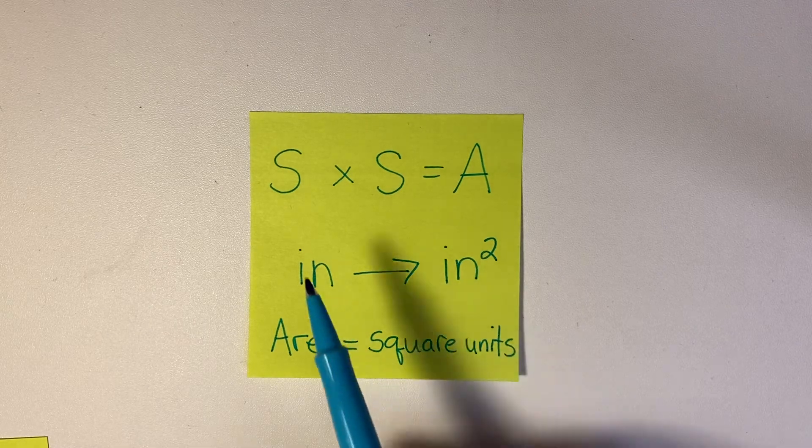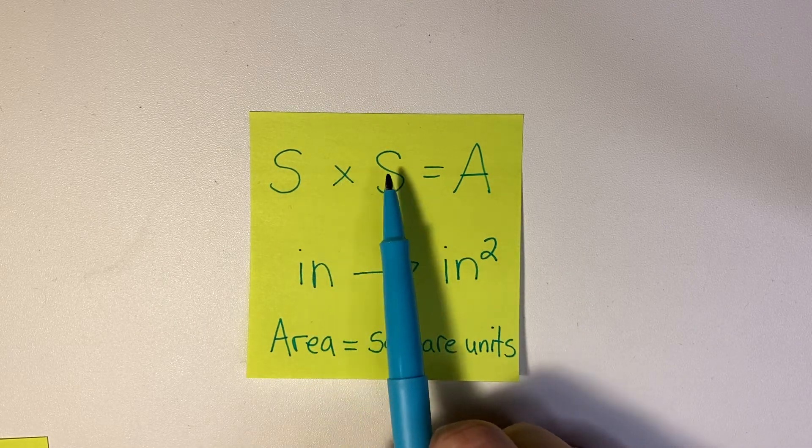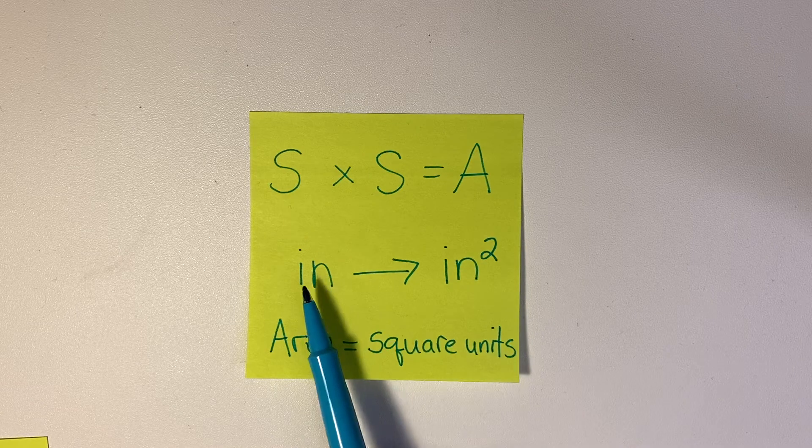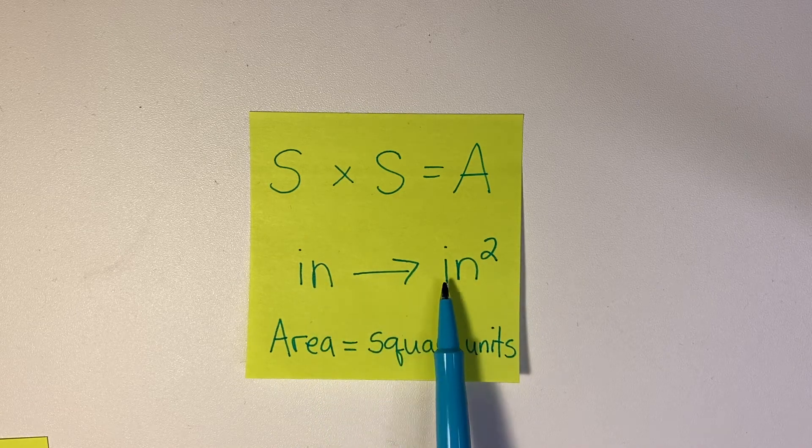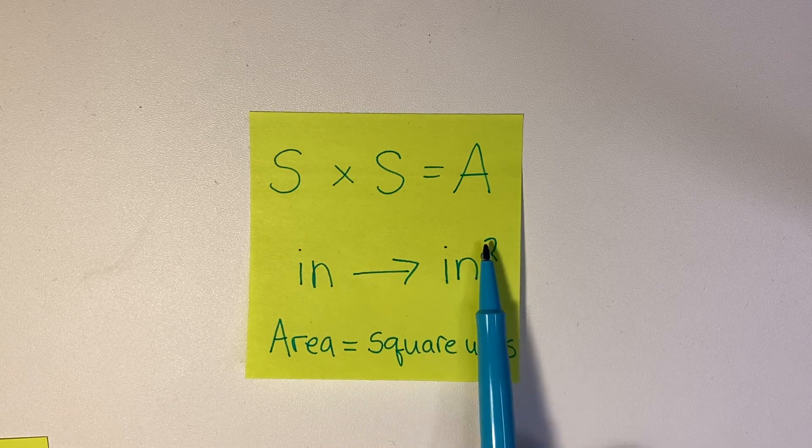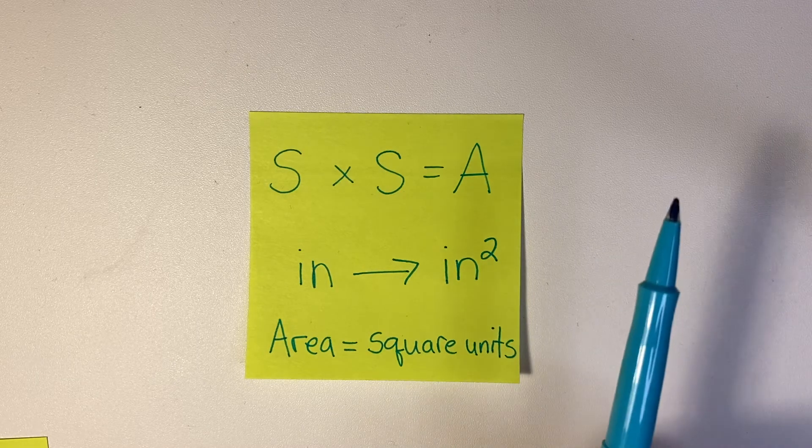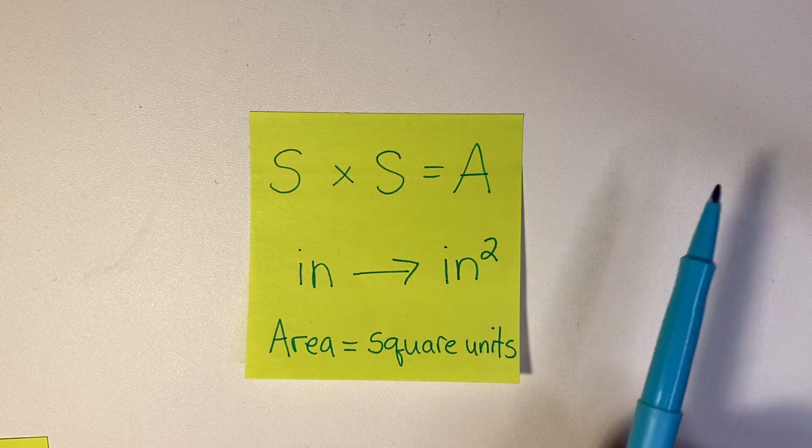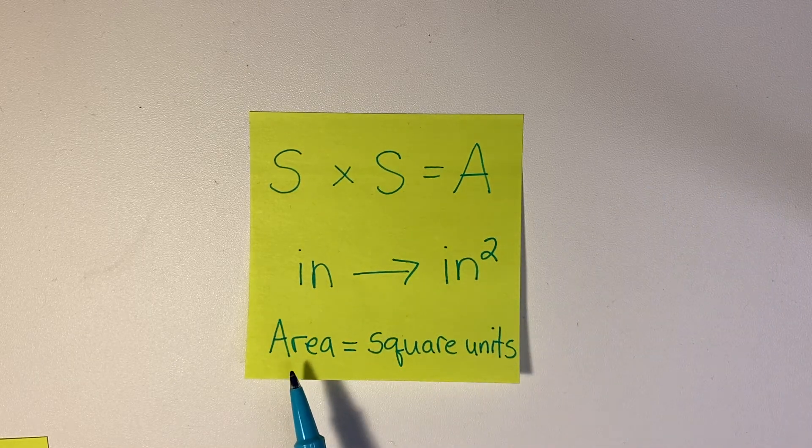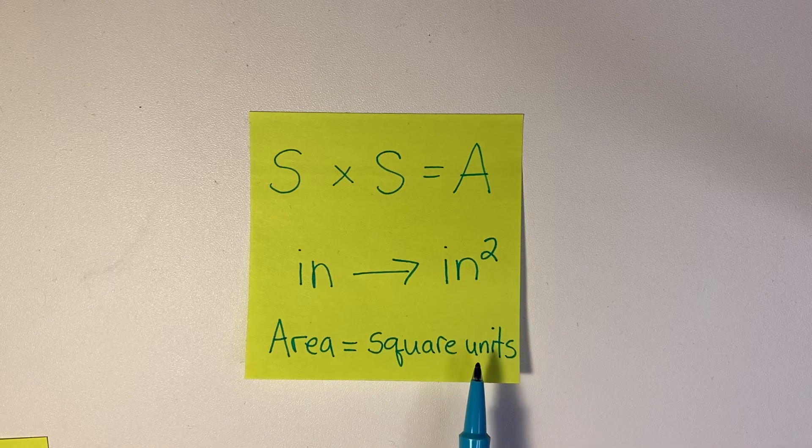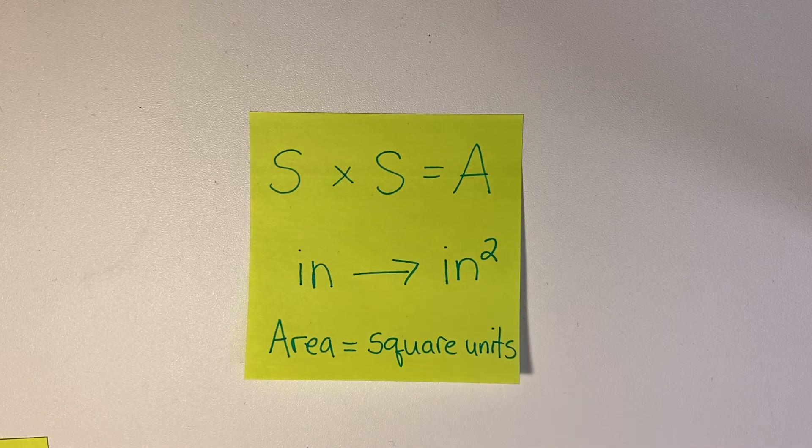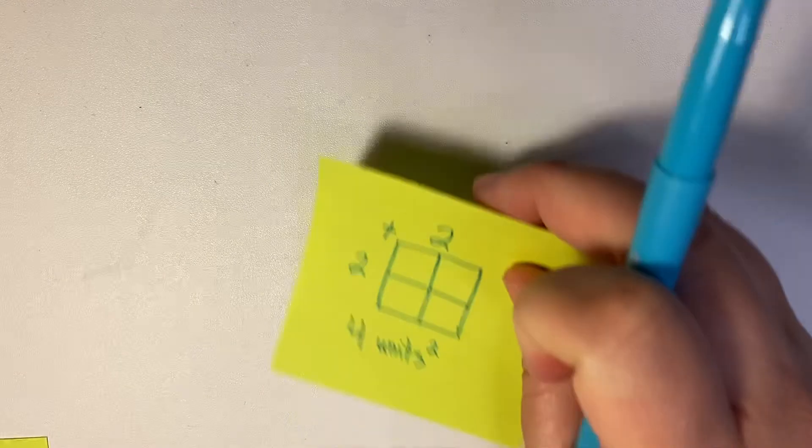We can say that the formula for finding the area of a square is side times side equals the area. If it was in inches, then it would become inches squared. Remember, that little two means squared. The area equals square units. The side is one-dimensional, and the area is two-dimensional.